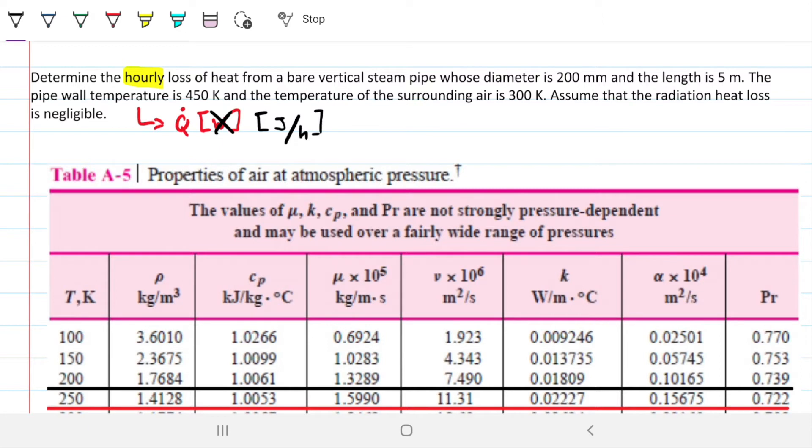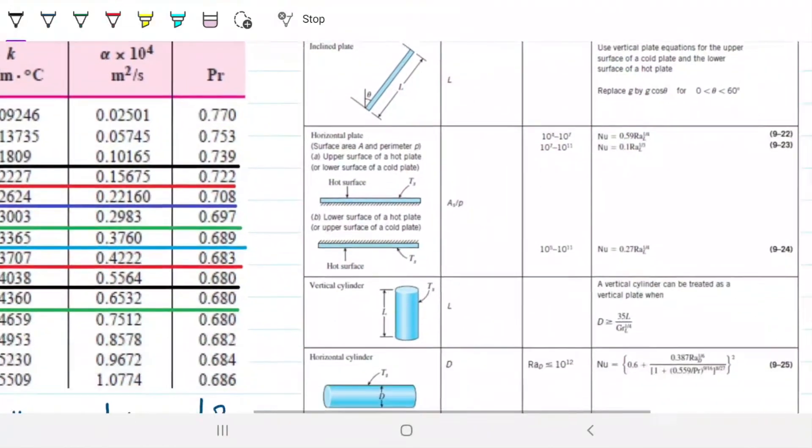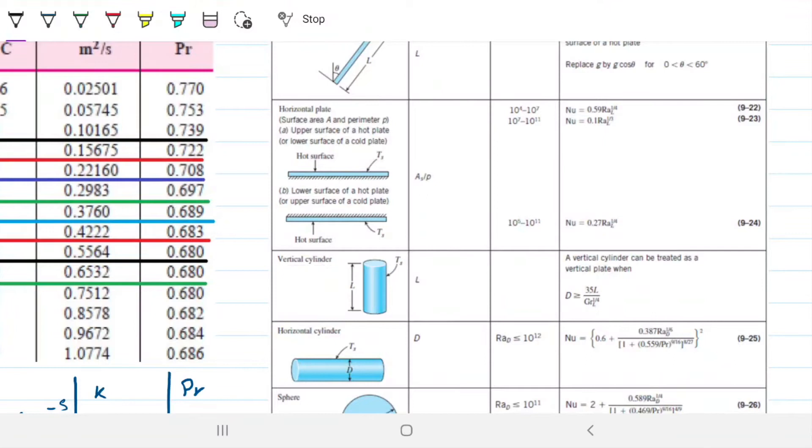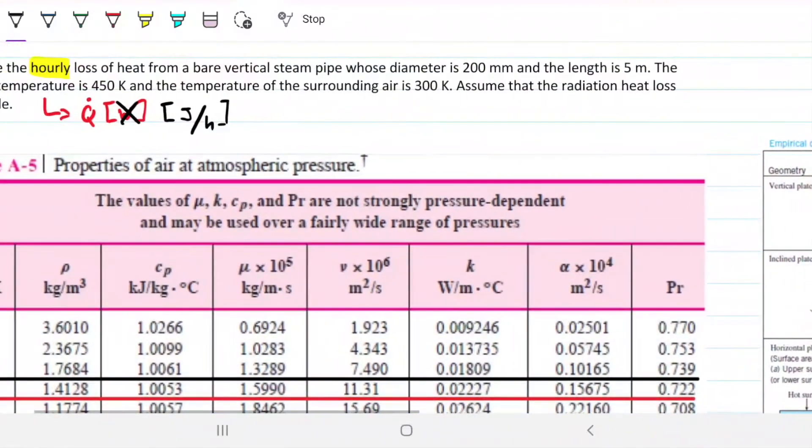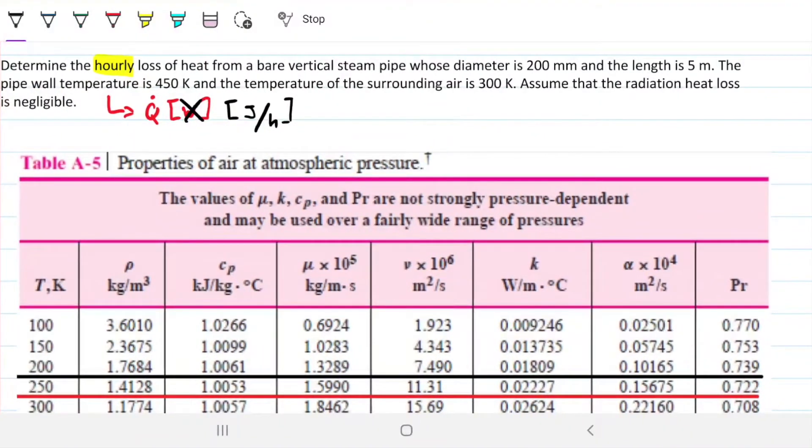So we need to remember to convert when we get to that point. What else? We have a vertical pipe, so if we were to draw it, there's a drawing here. This is our situation. A vertical cylinder or vertical pipe with a diameter of 200 mm and a height of 5 meters. What else? The pipe wall is at 450, so the outside of the pipe is 450 and T infinity is 300. So the temperature of surrounding air, that's not going to change regardless of the temperature of that guy there, which is 300 Kelvin.